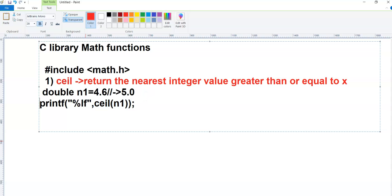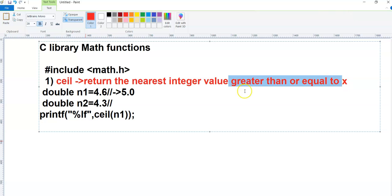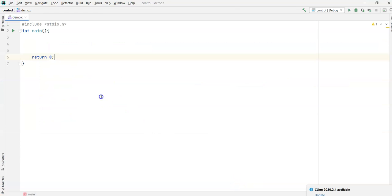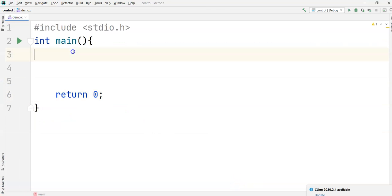Take another example: you take double n2 is equal to 4.3. However, the nearest number is 4.0, but it should be greater than or equal to x. So 4.0 is not greater than 4.3, so that's where it will also return 5.0. Let's try to create an example here and see what output we are getting.